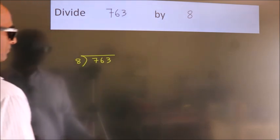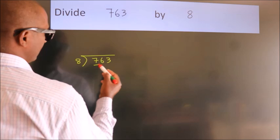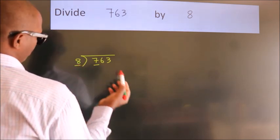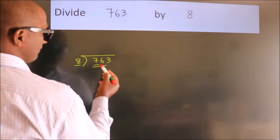Next, here we have 7, here 8. 7 is smaller than 8, so we should take 2 numbers, 76.